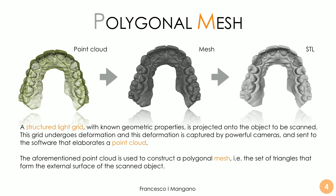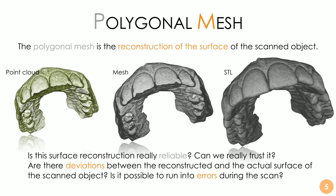A structured light grid with known geometric properties is projected onto the object to be scanned — usually the patient model. This grid undergoes a deformation, which is captured by the cameras. The cameras send all information to the software, which re-elaborates a point cloud using a very powerful algorithm. This point cloud is then used to construct a polygonal mesh through a process called interpolation. A mesh is a set of triangles forming the external surface of the scanned object — we are talking about surface reconstruction, not the whole object.